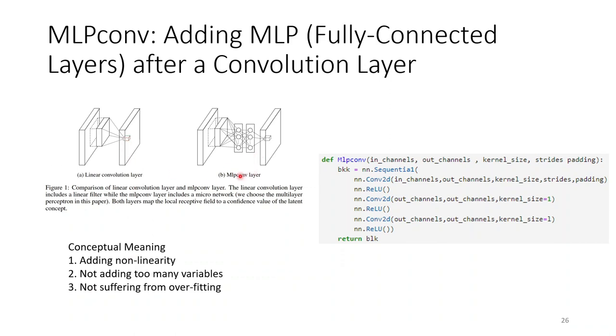And once it uses a few 1 by 1 convolutions, it can create the non-linearity, but it won't add too many parameters. So it is a method, it's easier to implement. Just use the ReLU. After the ReLU, this is the first 1 by 1 convolution. This is the second 1 by 1 convolution. And you can see the kernel size is just one. So it can prevent the model from over-fitting.